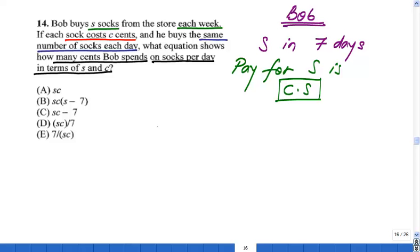He buys the same number of socks every day, which means in one day, you can say the number of socks in one particular day - it could be any one because it's the same number of socks. It will be S, the number of socks in seven days, divided by seven.